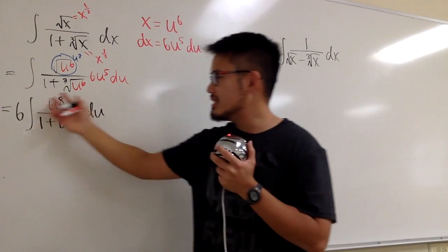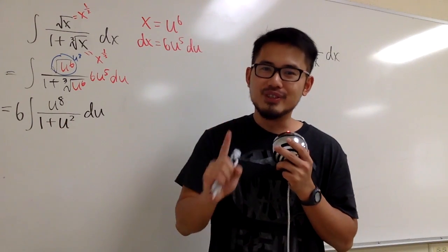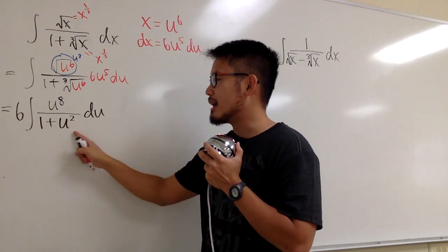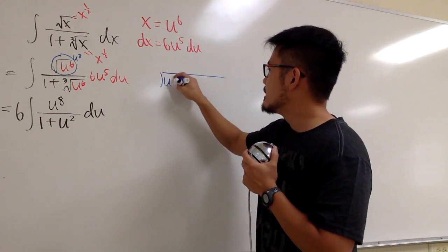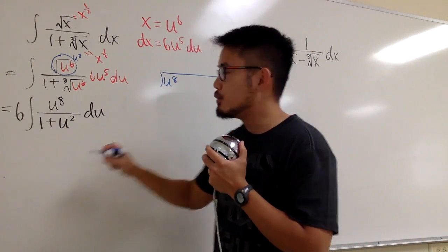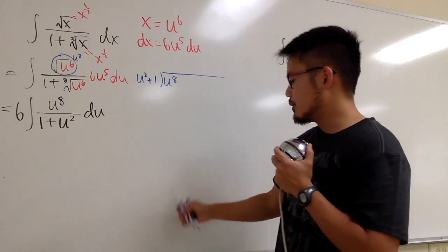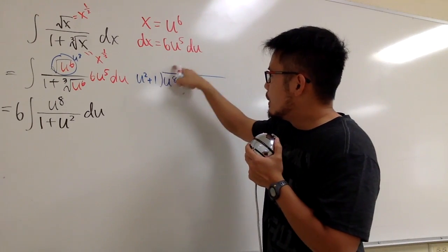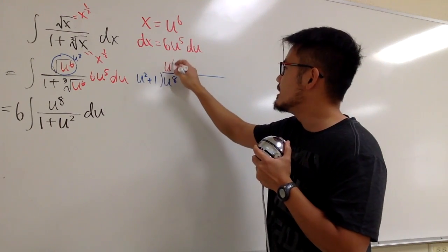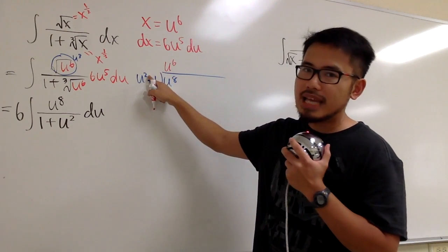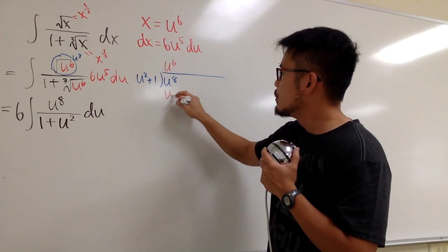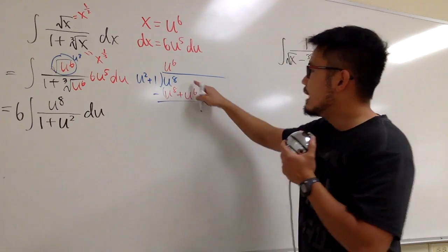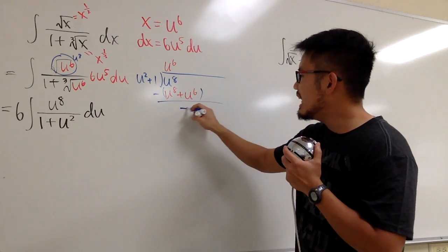The degree on top is 8, which is bigger than the degree on bottom, which is only 2, so we do long division. We divide u to the 8th by u squared plus 1. First: u to the 6th times u squared gives u to the 8th, and u to the 6th times 1 gives plus u to the 6th. Subtracting gives negative u to the 6th. Next: negative u to the 4th times u squared gives negative u to the 6th, and times 1 gives minus u to the 4th. Subtract to get positive u to the 4th.